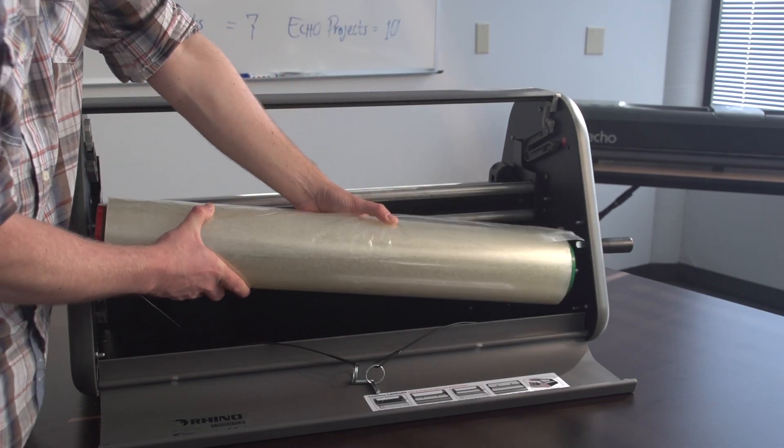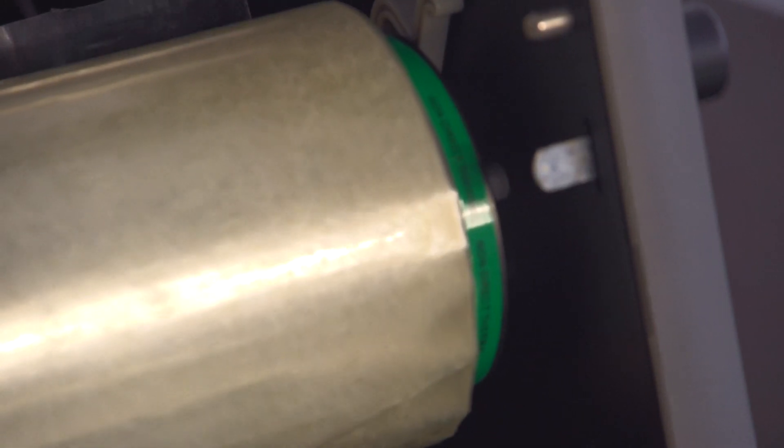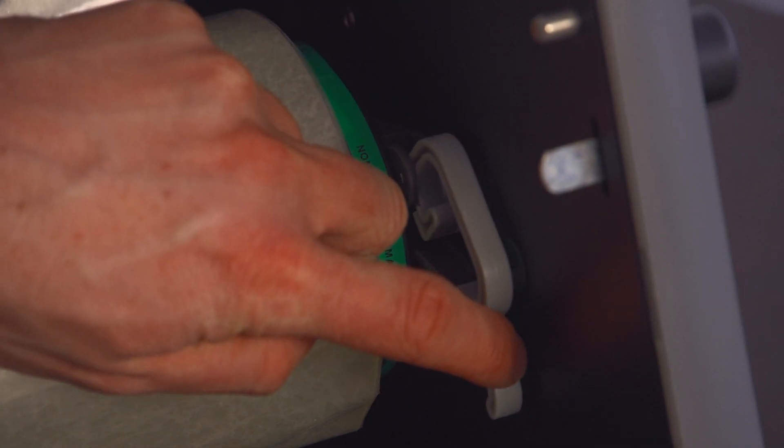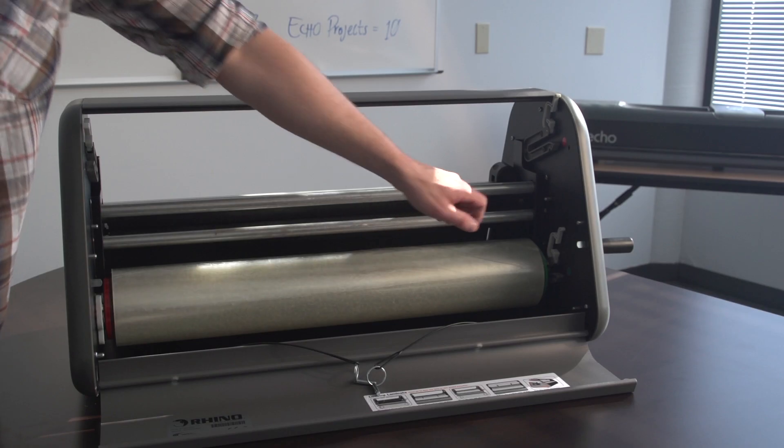Next, slide the bottom supply roll into place making sure the green and red ends of the supply roll align with the corresponding labels. Close the latches on the brackets.